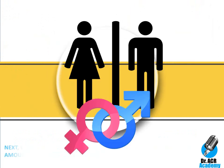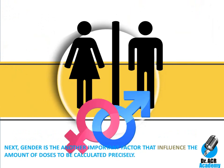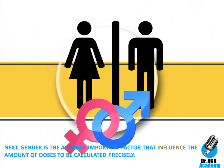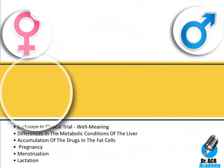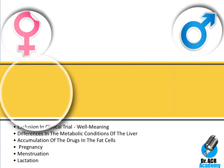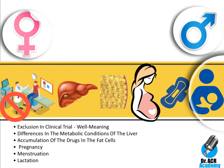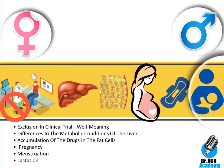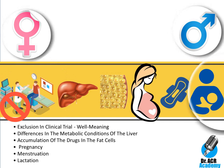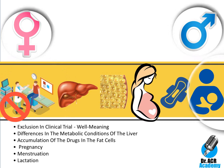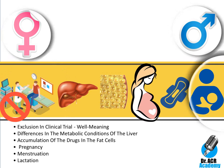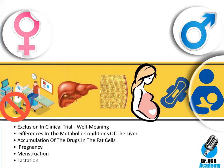Certain drugs produce more confusion in adults, such as hypnotics and tranquilizers. Gender is another important factor that influences the amount of dose to be calculated precisely. Women tend to behave differently with drugs due to their exclusion during clinical trials, differences in metabolic conditions of the liver, the accumulation of drugs in fat cells, and specific conditions under pregnancy, menstruation and lactation.